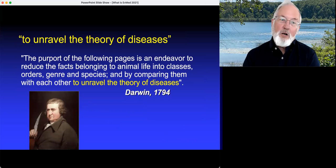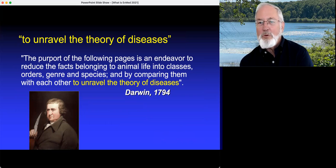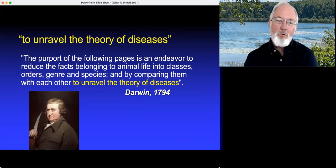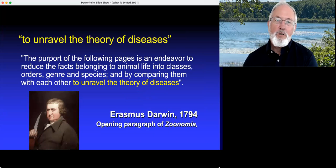Here's another Darwin. In 1794 he tries to unravel the theory of diseases by reducing the facts belonging to animal life into classes, order, genre, and species and comparing them to each other. These are the real origins of the basic idea of natural selection with Charles Darwin's grandfather, Erasmus Darwin. That sentence is from the very opening paragraph of his very long poem, Zoonomia.